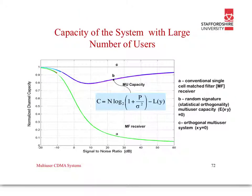The capacity of a system with a large number of users is shown in this diagram, plotting normalised capacity against interference level. In a conventional single-cell matched filter receiver, as the signal-to-noise ratio increases the normalised channel capacity is reduced, shown by the green line. B is the random signature or statistically orthogonal multi-user capacity, which is closer to one. C is the orthogonal multi-user system — in ideal conditions the full channel capacity is used because total orthogonality eliminates interference.